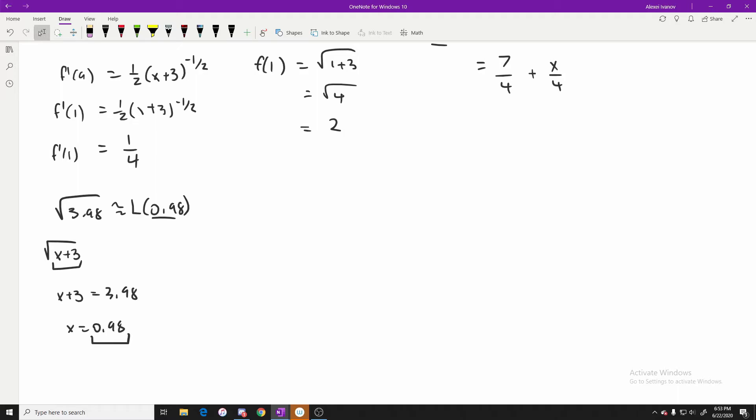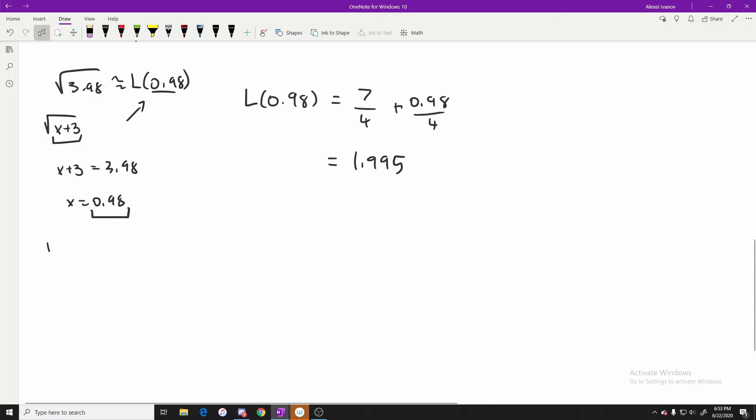So this right here is the value that is going to be plugged in into our linearization function. And now we can go about computing the linearization of f at 0.98 pretty simply. We just plug it in and we are going to solve for the value 1.995. And now the other thing that's been asked is to compute the root of 4.05. And again, we have the square root of x plus three. So x plus three equals 4.05, right? That means x must equal to 1.05. This right here is going to be equivalent to L at 1.05. And again, to compute that, we're simply going to plug that in into our function.